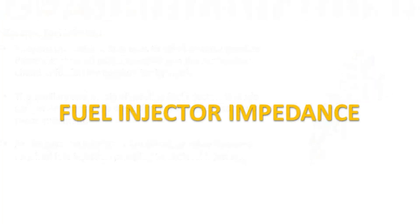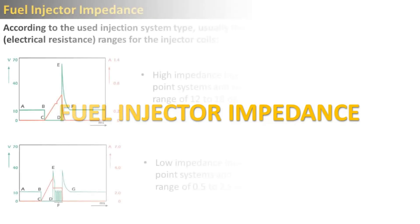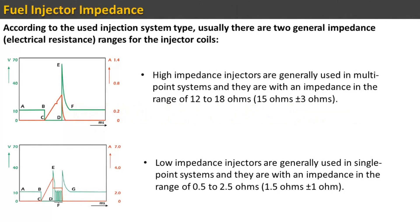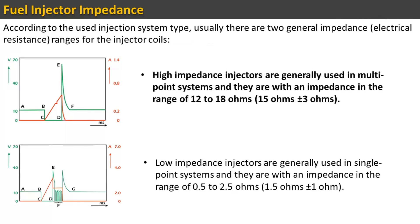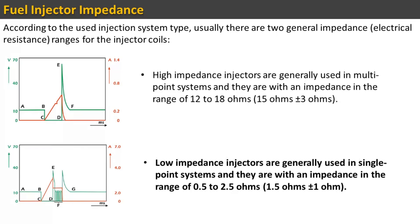According to the injection system type used, there are usually two general impedance ranges for the injector coils. High impedance injectors are generally used in multipoint systems and have an impedance in the range of 12 to 18 ohms. Low impedance injectors are generally used in single point systems and have an impedance in the range of 0.5 to 2.5 ohms.